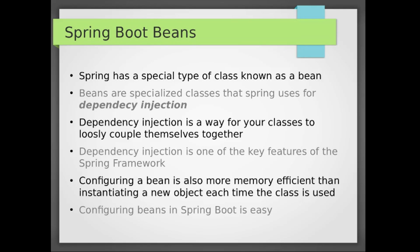A very core feature of Spring in general is dependency injection. Dependency injection is a way to loosely couple your classes from each other. The way Spring does this is through the use of a specialized class known as a bean. Our beans will be like singletons. So for example, if you have a class that is an Employee, and an Employee has another class within it that is a Department, instead of having to instantiate a new Department each time with the new keyword, you can inject a Department class that's already been instantiated like a singleton. That way it's more memory efficient and also easier to manage.